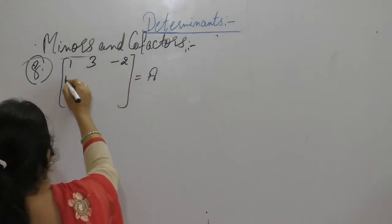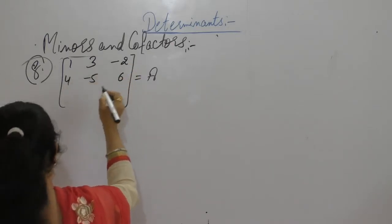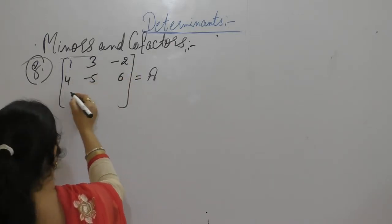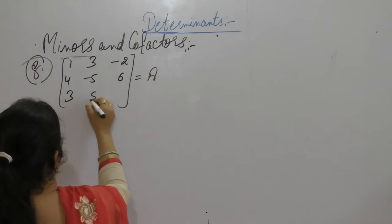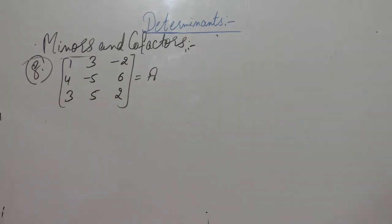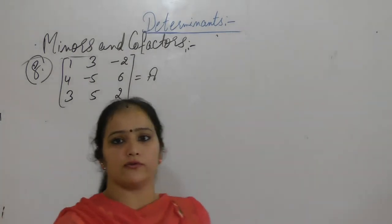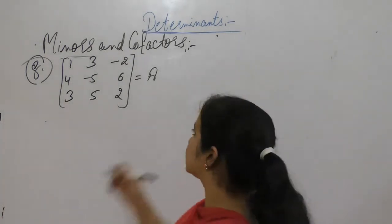Given the matrix with elements 2, 4, minus 5, 6, 3, 5 and 2. Find the values of minors and cofactors of all elements.